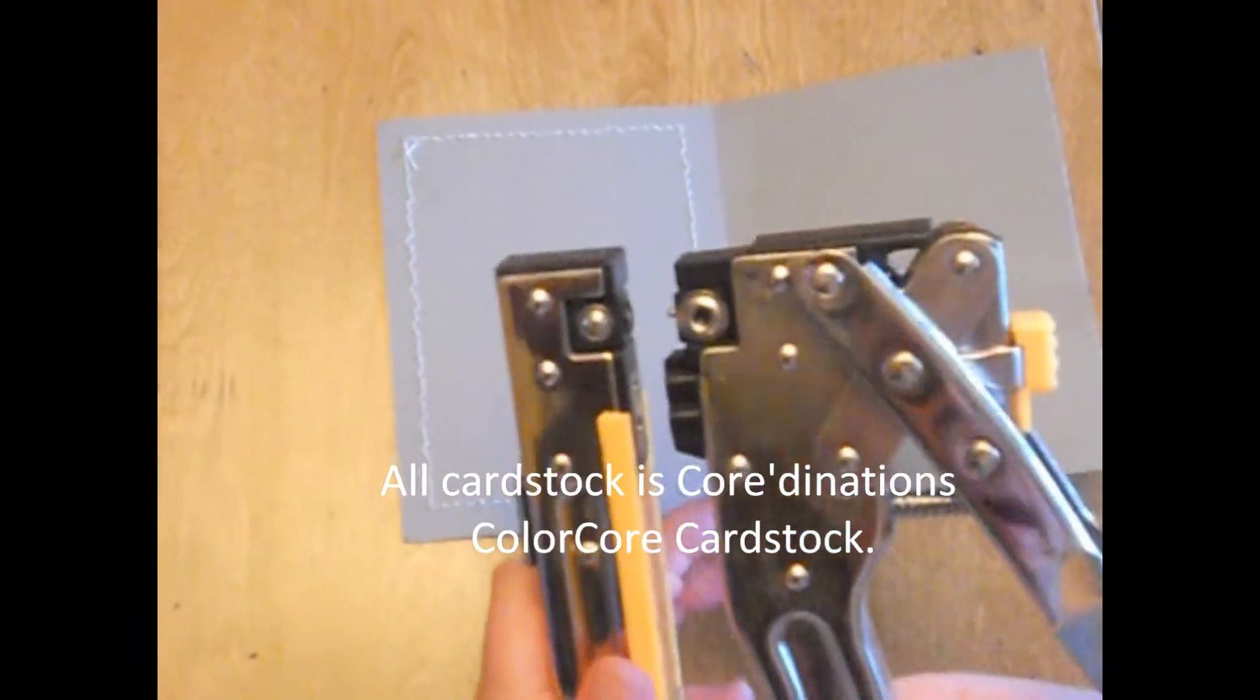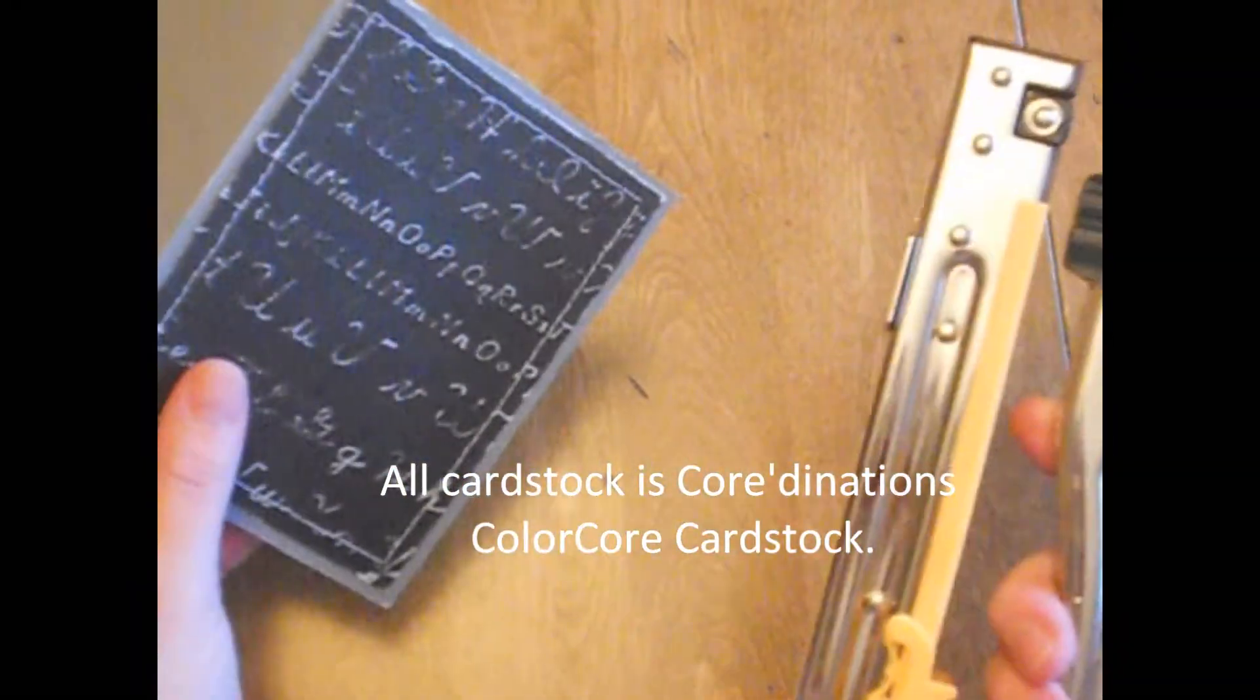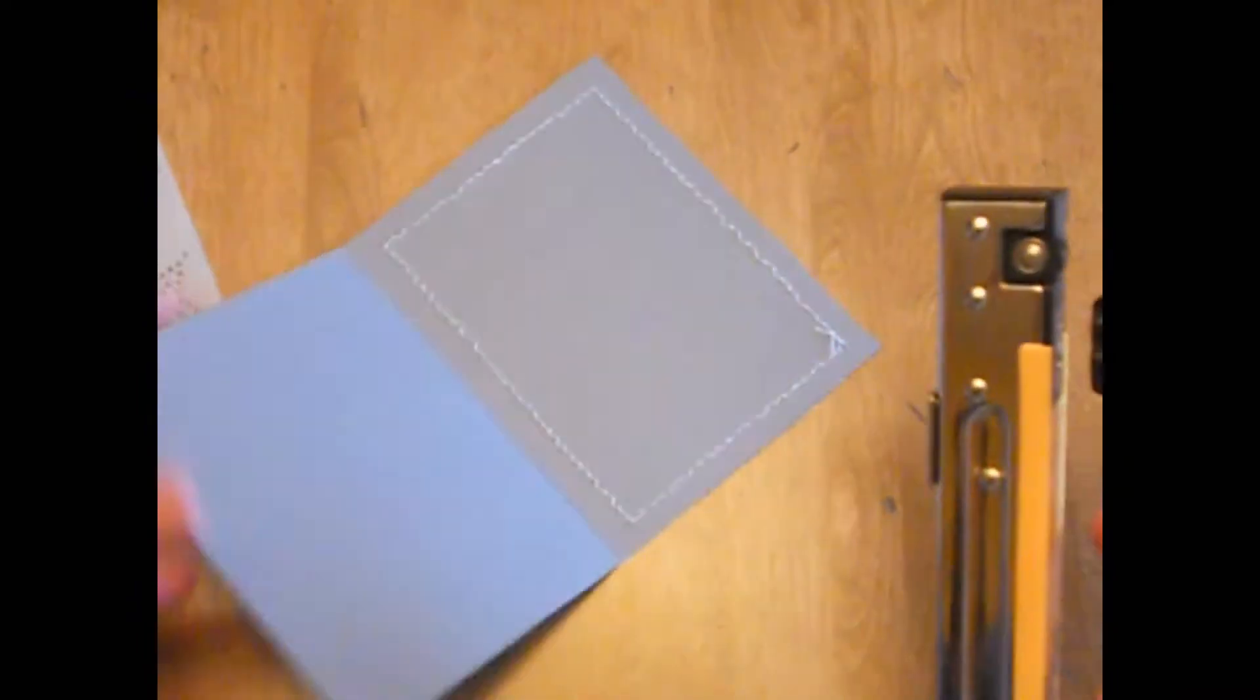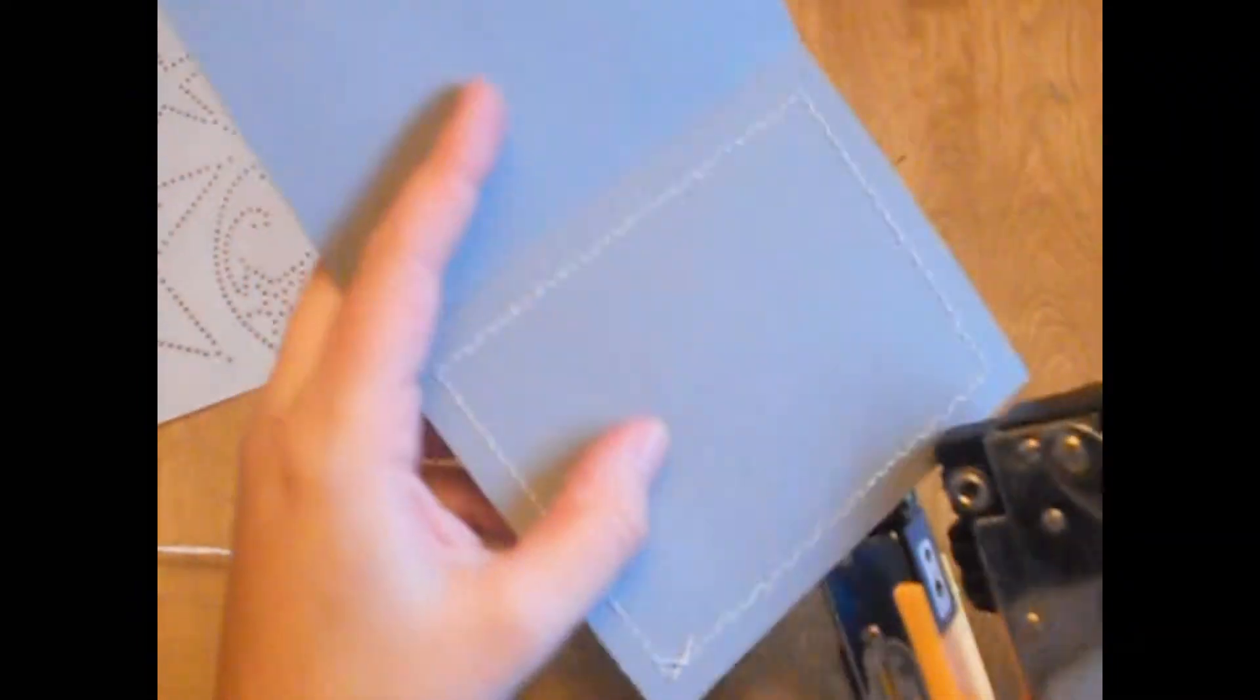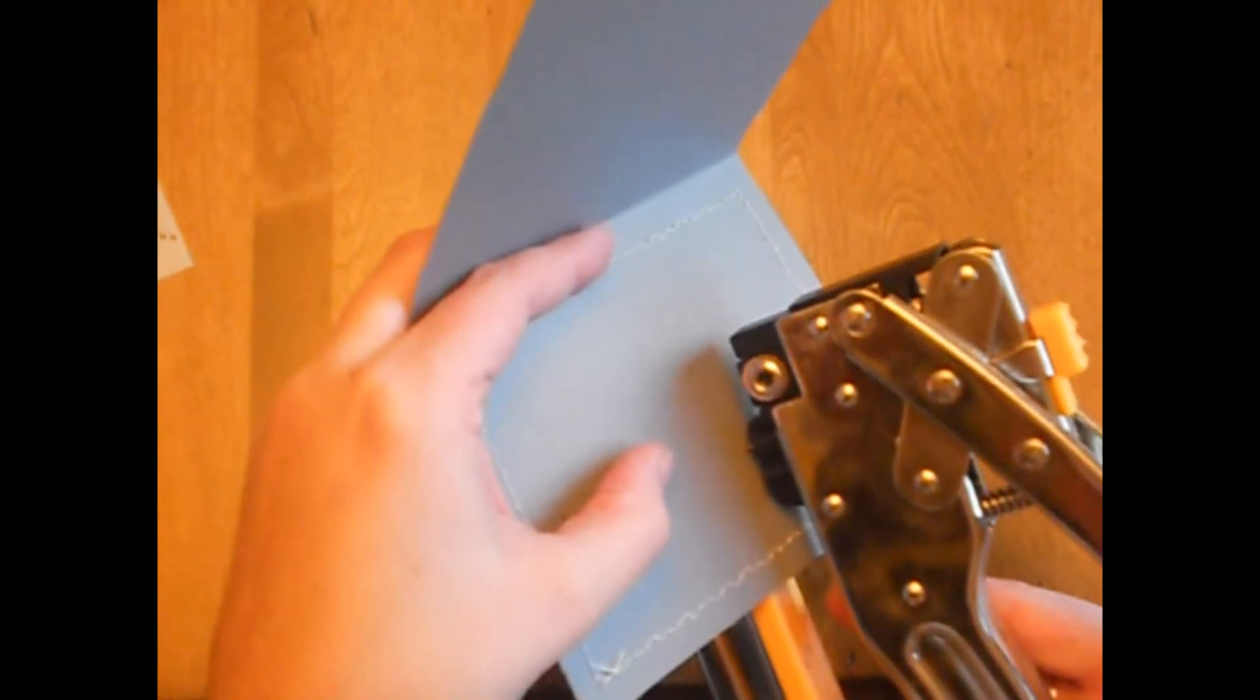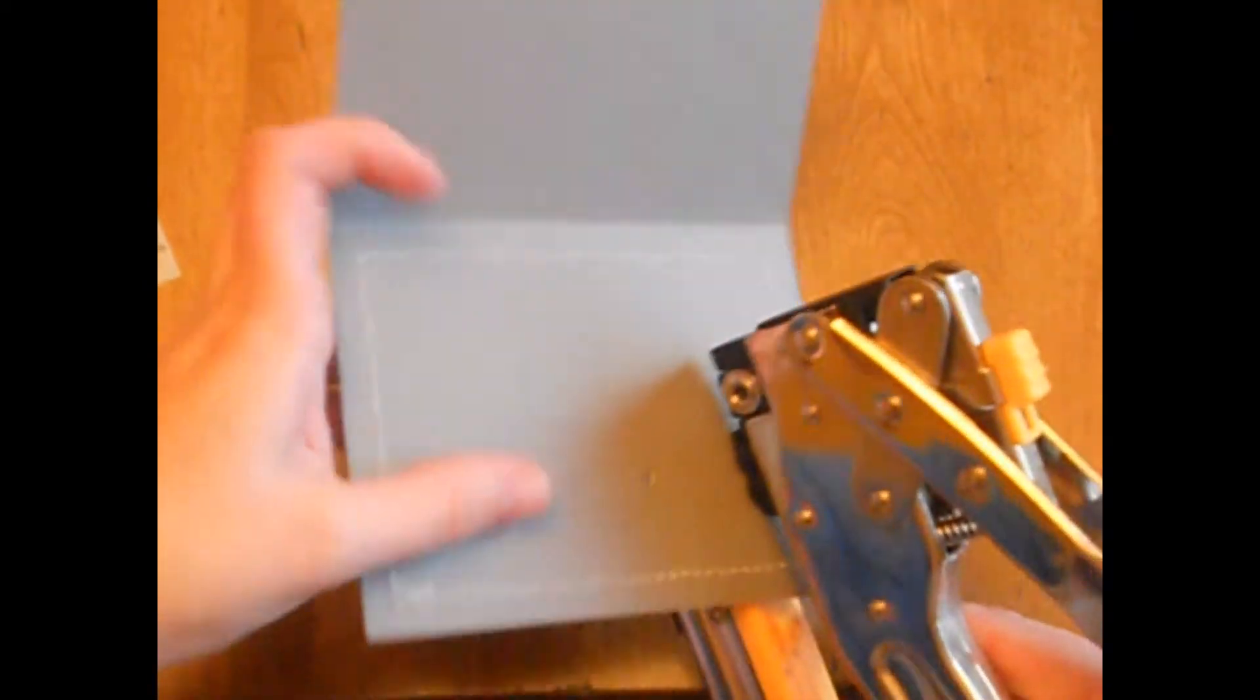And then I'm using my Crop-a-dile because I have two sheets of paper here. And then on the dots that I created, I'm just going to punch some holes.